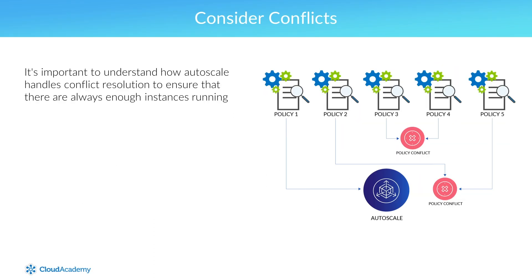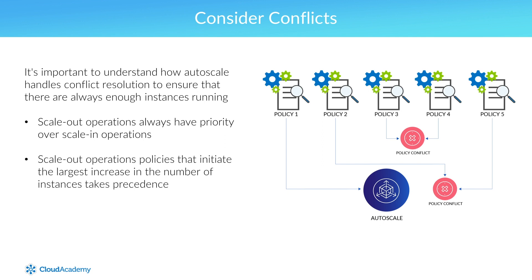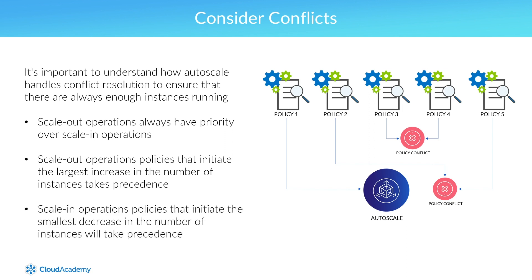Anytime you configure multiple rules and policies, those rules and policies are often going to conflict with one another. It's important to understand how autoscale handles conflict resolution to ensure there are always enough instances running. Scale-out options always have priority over scale-in options. When multiple scale-out operations conflict, the rule that initiates the largest increase in the number of instances takes precedence. For scale-in conflicts, the rule initiating the smallest decrease takes precedence.